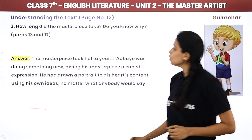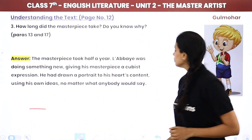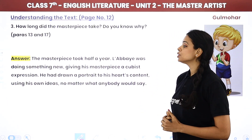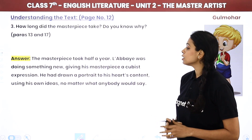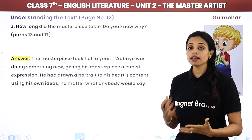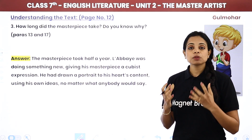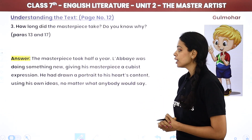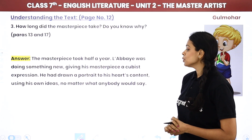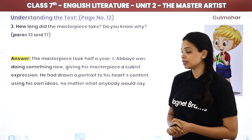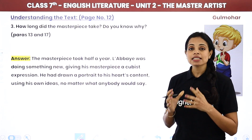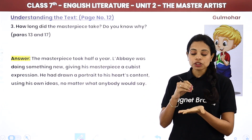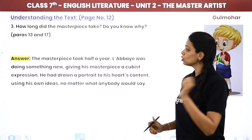The next question: how long did the masterpiece take? The masterpiece took half a year, which is six months. Libai was doing something new — giving his masterpiece a cubist expression, using geometrical shapes in the painting. He had drawn a portrait to his heart's content, using his own ideas, no matter what anybody would say. He painted from his imagination and was not bothered about what people would say. So that was it.